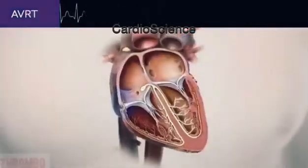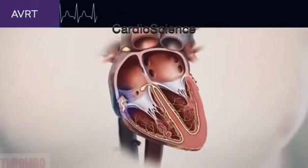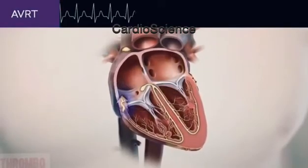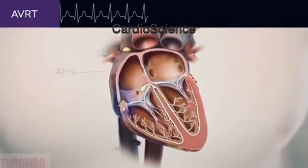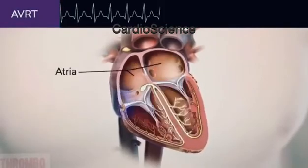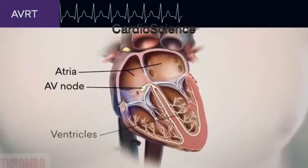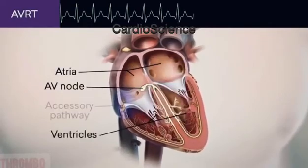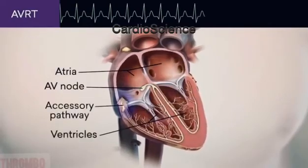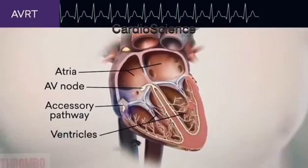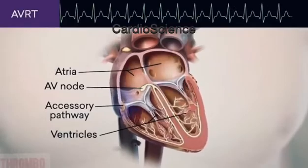In atrioventricular reciprocating tachycardia or AVRT, an electrical circuit involving the atria, atrioventricular node, ventricles, and an accessory electrical path causes the heart to beat rapidly.